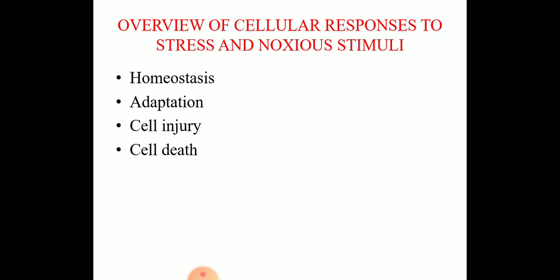As we have already discussed in our previous lecture, the cells normally remain in a steady state that is called homeostasis. But whenever the cell is exposed to stress and injurious stimuli, a sequence of events follows that is termed as adaptation, followed by cell injury and cell death.